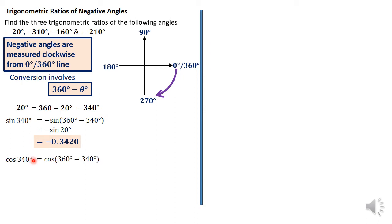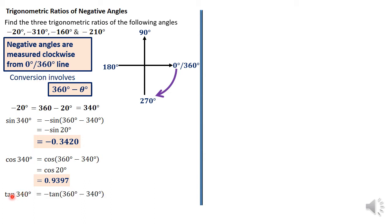The cos of 340 equals cos(360 − 340). This time it is positive because cosine is positive in the fourth quadrant — the same as cos(20°) = 0.9397. For tan, tan(340°) = negative tan(360 − 340) = negative tan(20°) = −0.3640.